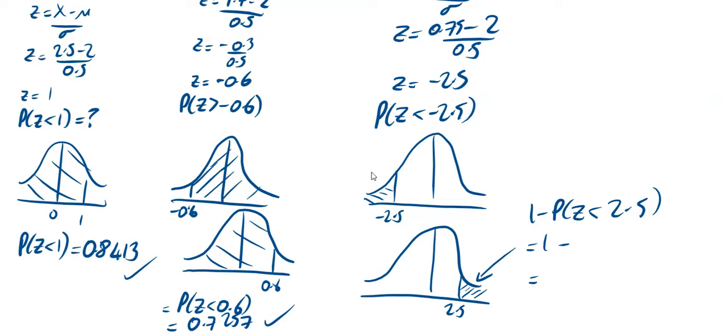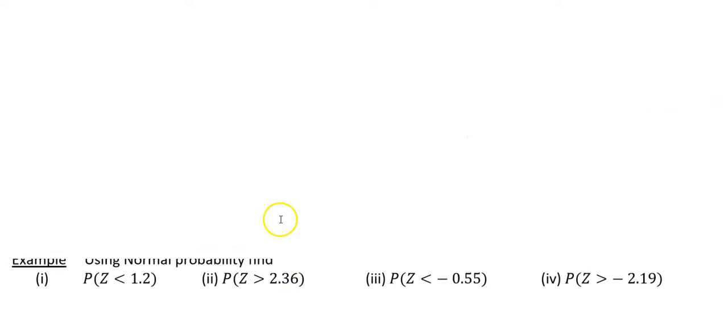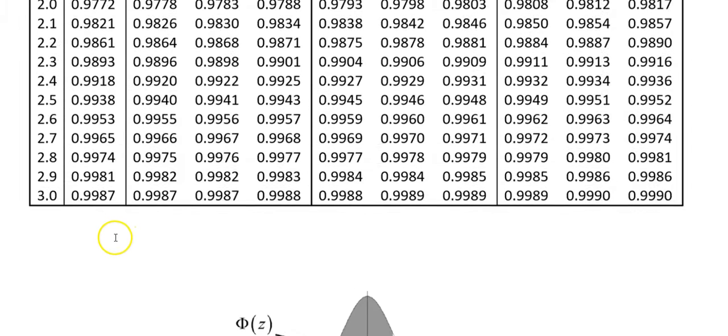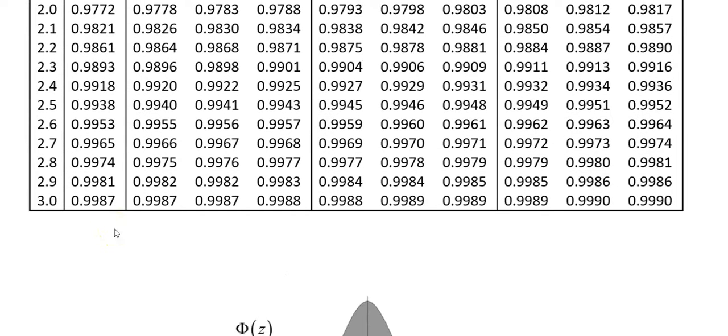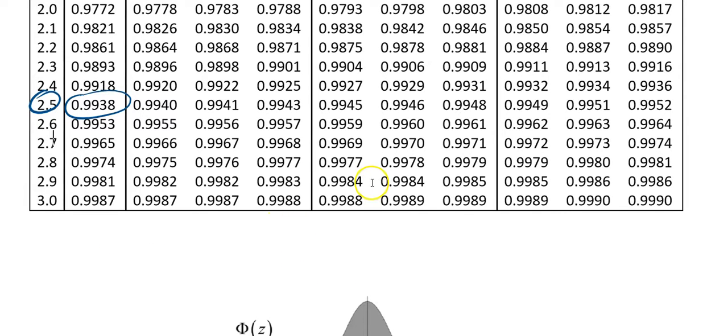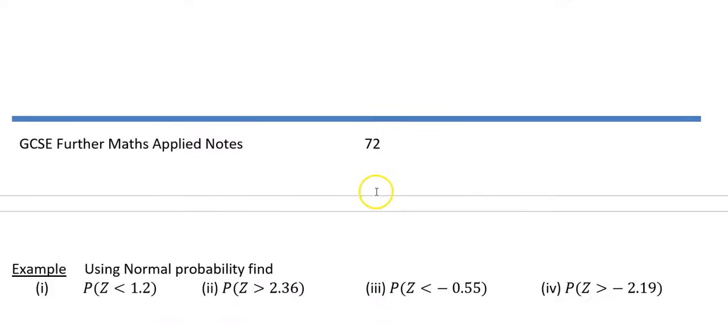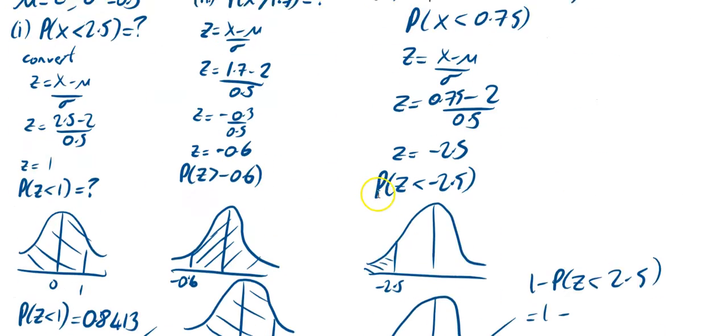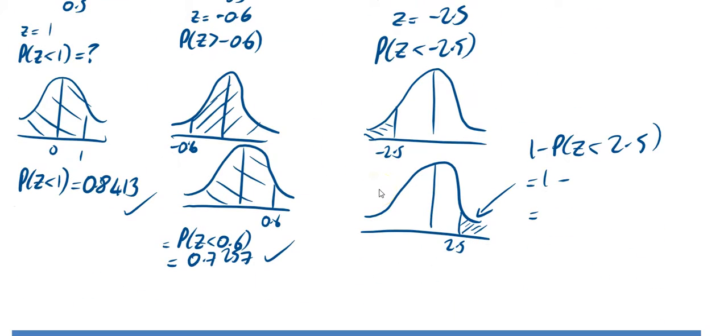We'll find that on our tables. If you go back up to your tables, we're looking for 2.5 on our tables. So 2.5 and it was 2.50. So 2.5 is here, that's 0.9938. We'll go back down and put that in. It was 0.9938, and if we put that in, you will get 0.0062. And that's it.